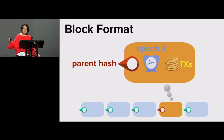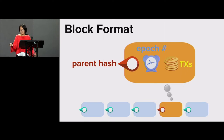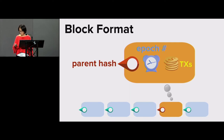Before I begin talking about the protocol, I want to set things up and explain what I mean by a block. A block contains a pointer to the previous block called the parent's hash. The parent's hash binds not only to the parent but also to the entire prefix of the chain, just like in Bitcoin or Ethereum. There's a timestamp which we'll call an epoch — you can imagine an epoch is like a second. We want to confirm one block every second in the ideal case, assuming a synchronous network where messages arrive at honest nodes in about a quarter of a second. Of course, the block also includes the transactions it wants to confirm.